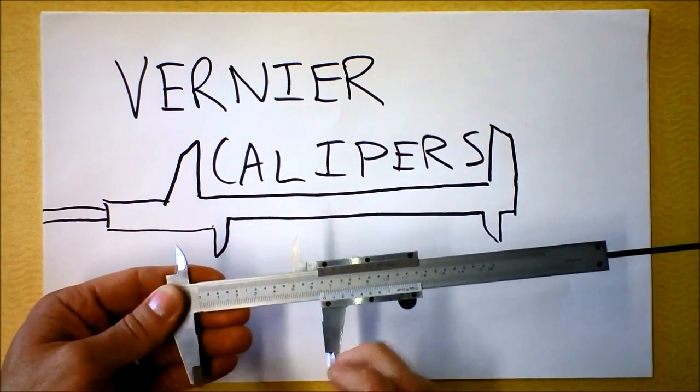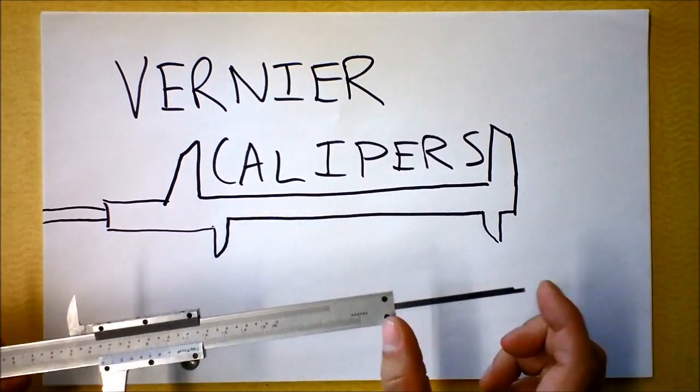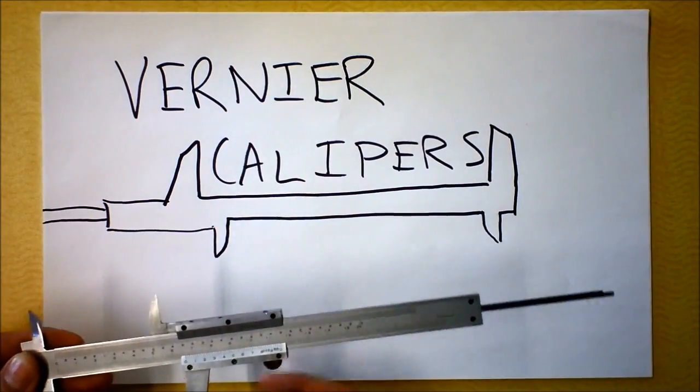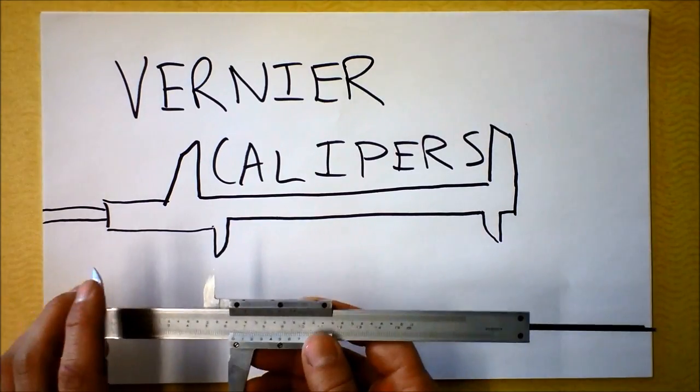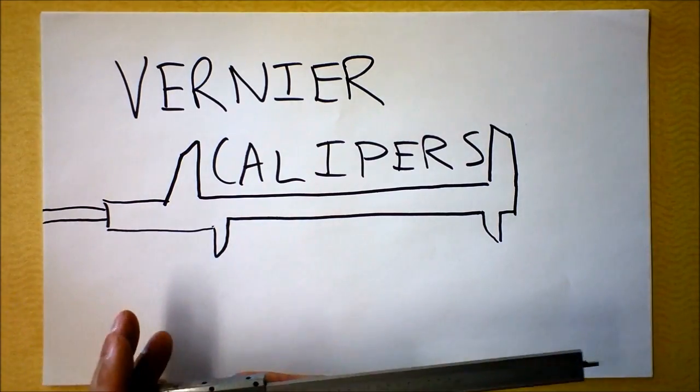So this is for outside measurements, this is for inside measurements, and that's for depth measurements. It's a really handy tool and you'll read the same distance for all three of those experiments assuming the distances that you're reading are the same.